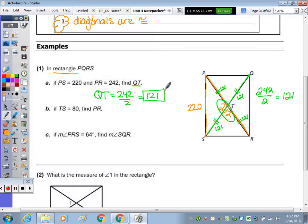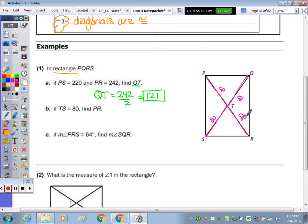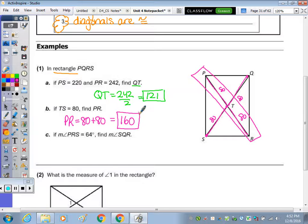Now for part B, TS is 80. I know this segment is 80, and this is 80, and this is 80, because the diagonals are congruent and bisect each other, so each half is the same. To find PR, which is the whole diagonal from one corner to the opposite corner, that would be 80 plus 80, which is 160. Still no degrees because we're not referring to angles.